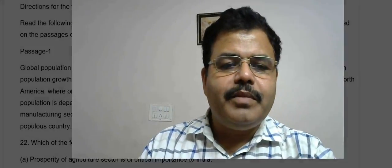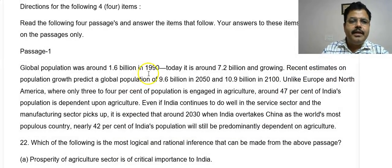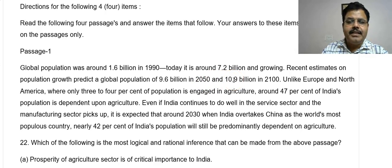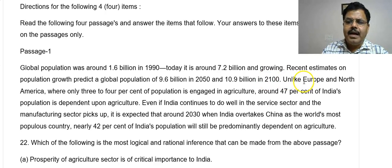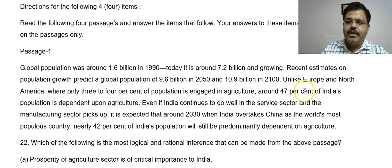Let us discuss question number 22. Global population was around 1.6 billion in 1990, today it is around 7.2 billion and growing. Recent estimates predict a global population of 9.6 billion in 2050 and 10.9 billion in 2100. Like Europe and North America where only three to four percent of the population is engaged in agriculture, around 47 percent of India's population is dependent upon agriculture.